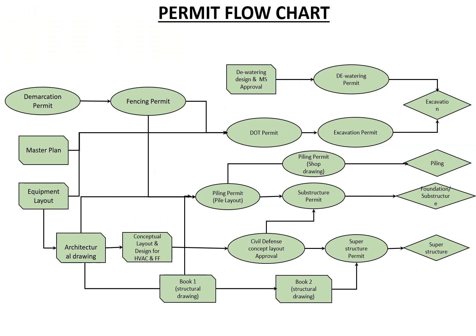The overall flow chart shows what permits are required for each activity. For excavation, we need demarcation permit, fencing permit, dewatering permit if required, DOT approval, and excavation permit. If piling is required, we apply for piling permits with shop drawings. For substructure foundation and raft work, a substructure permit is needed with conceptual layout, MEP work, and architecture drawing approvals. For superstructure, a superstructure permit requires complete structural design calculations and all architecture approvals.